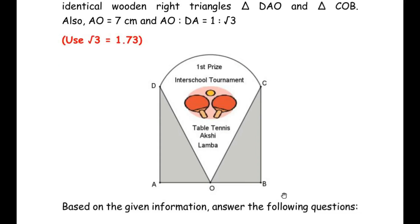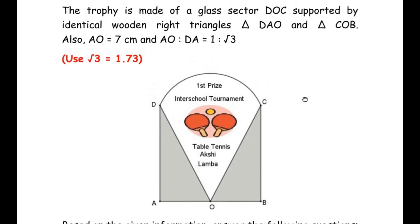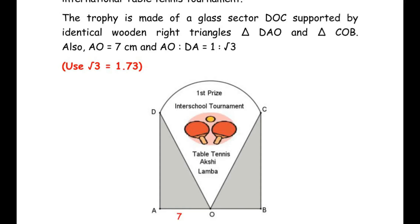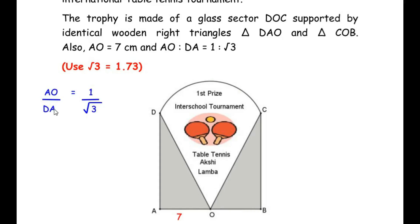Before we proceed to solving the sub-questions, let us understand the main question first. Akshi received a trophy which is a combination of shapes — it has 2 right-angled triangles and a sector DOC. They have given us the value of side AO which is 7 cm and the ratio of the sides. Representing this ratio as a fraction: AO/DA = 1/√3. Cross multiplying gives DA = AO × √3 = 7√3. So the value of side DA is 7√3 cm.